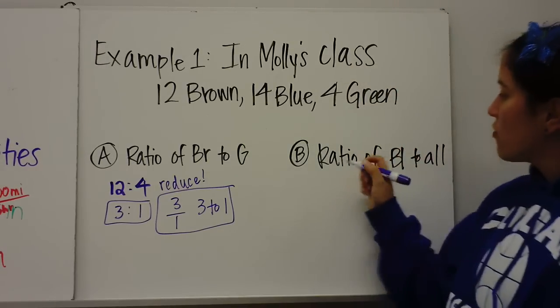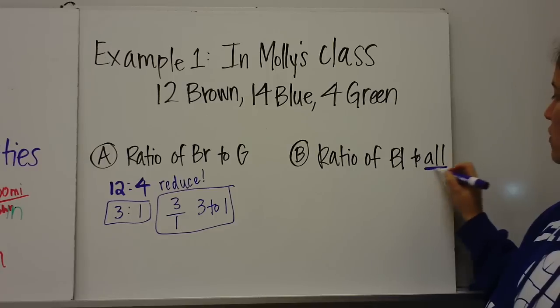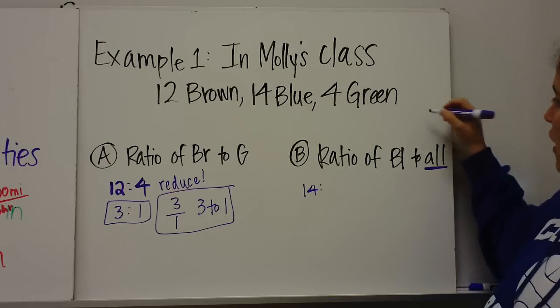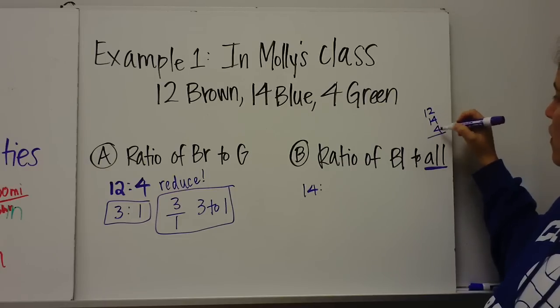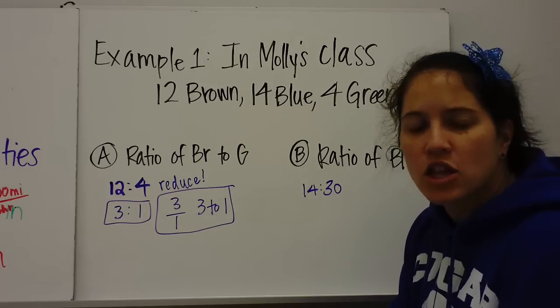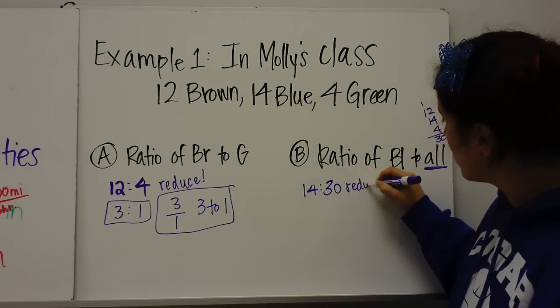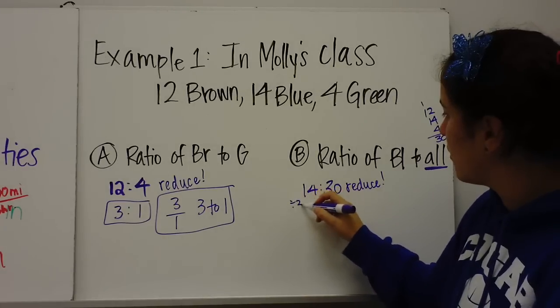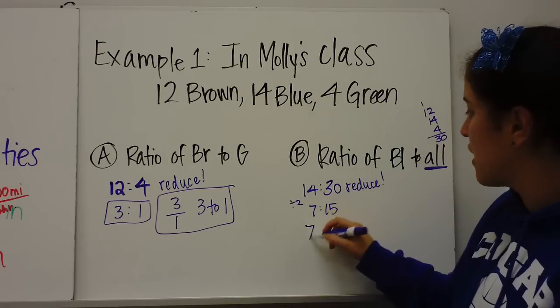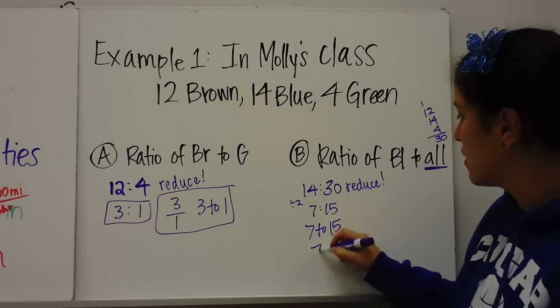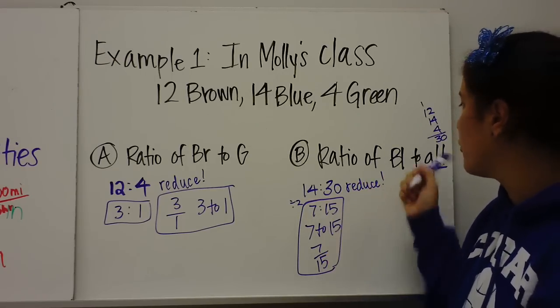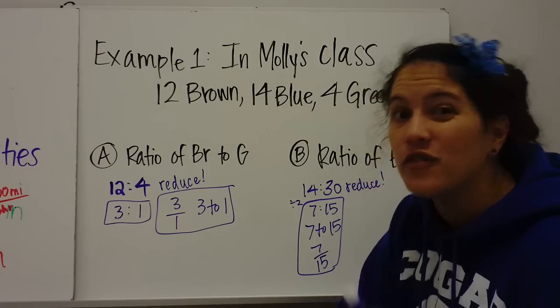Let's do B. The ratio of blue to all. So there's 14 blue. And how many all? To find all, we need to add them all together. So 12 plus 14 plus 4. So 30. 14 to 30, can we reduce that? We have to reduce. Divide them both by two, and we get 7 to 15. Will anything go to 7 to 15? No. So 7 to 15 and 7 to 15. So that means for every seven blue eyes, 15 all. That is a ratio of seven blue eyes to 15 total.